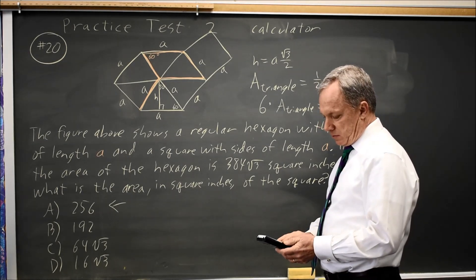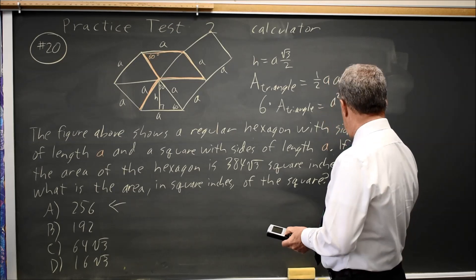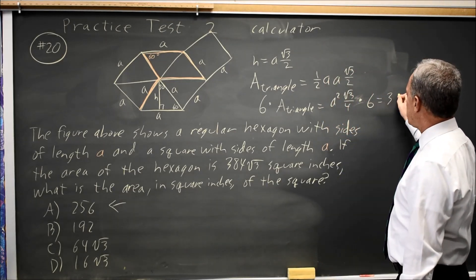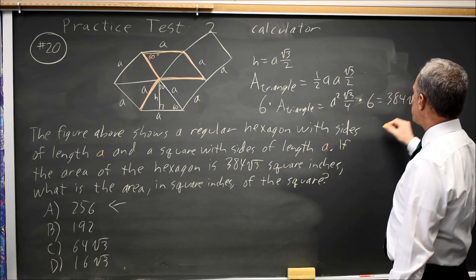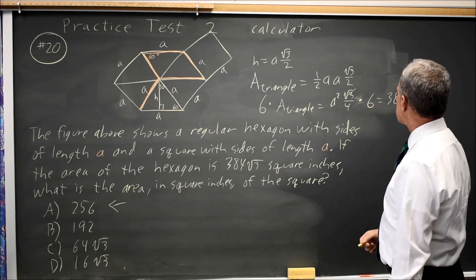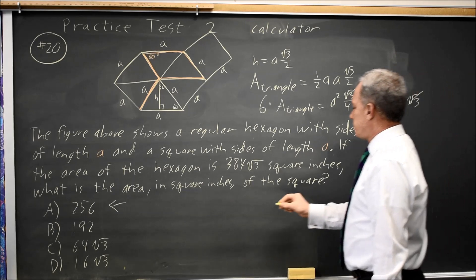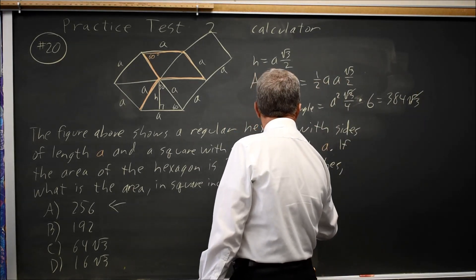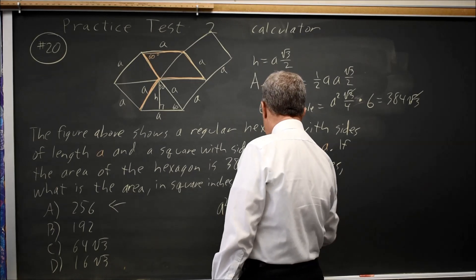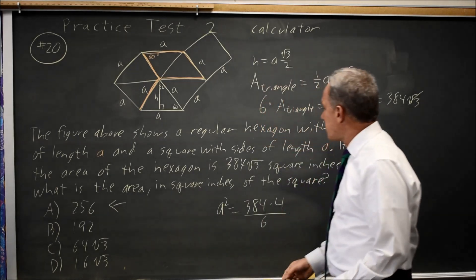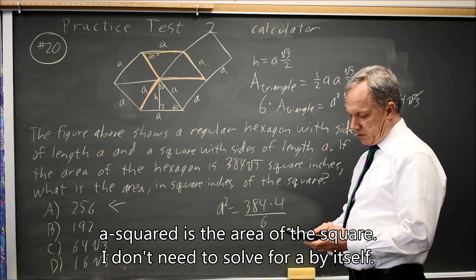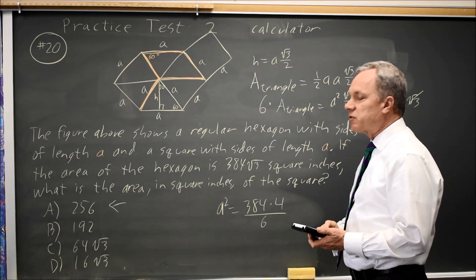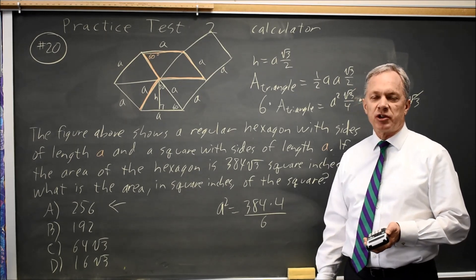So 6A²√3/4 equals 384√3. Root 3 cancels, and A² equals 384 times 4 divided by 6. That allows us to solve for A². 384 times 4 over 6 is 256, which is the answer found by estimation.